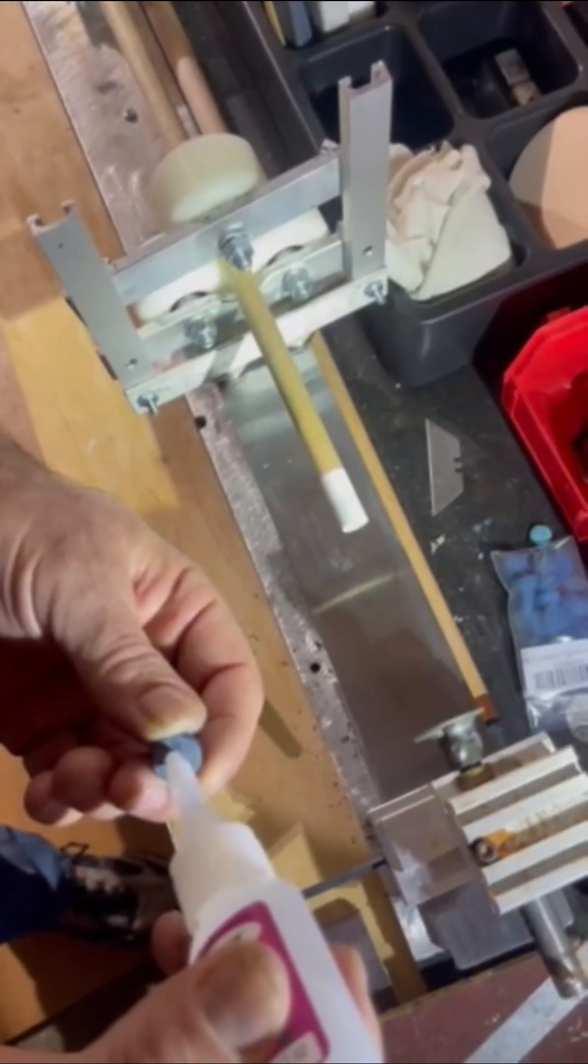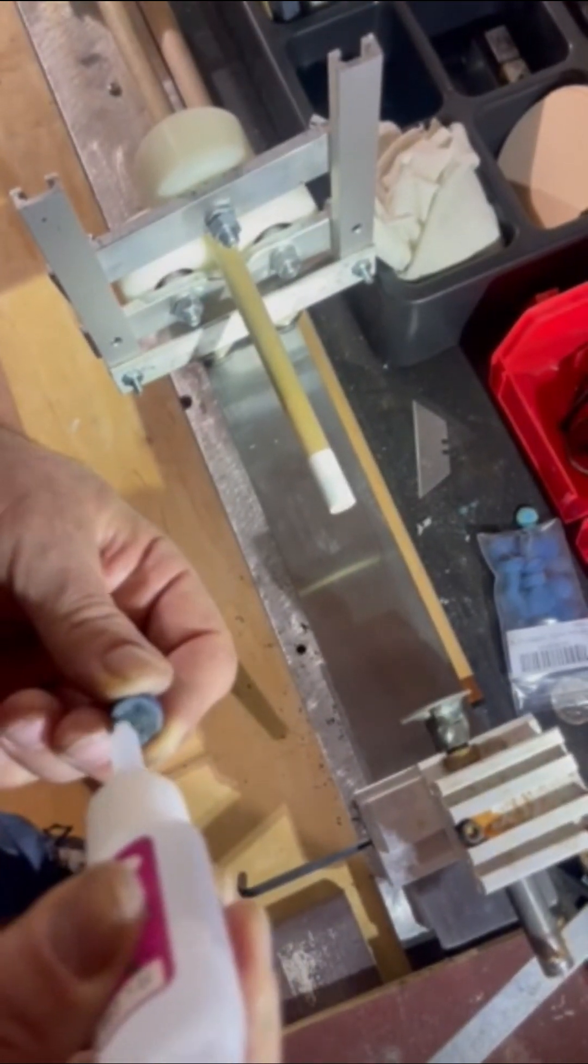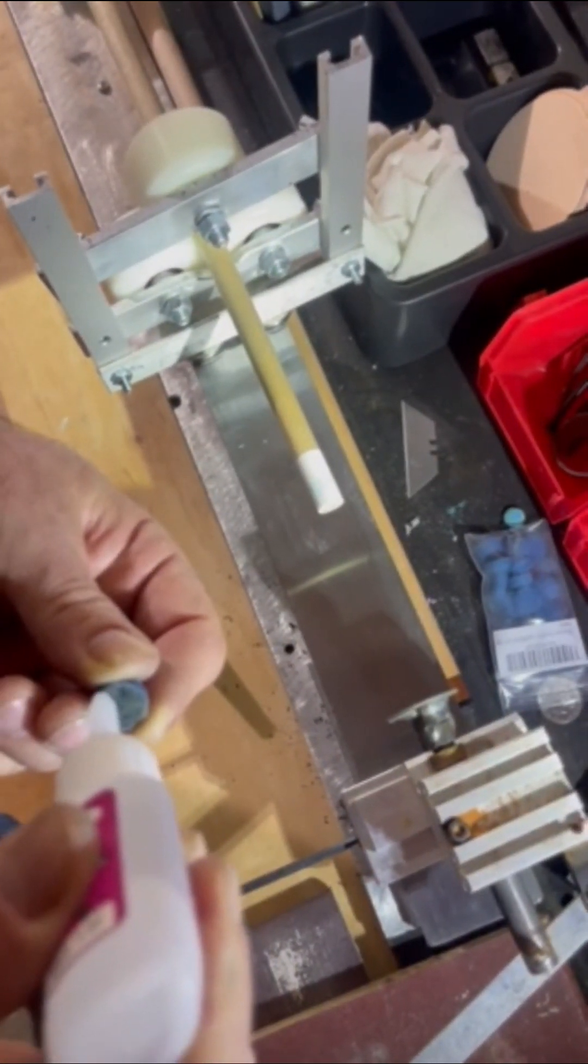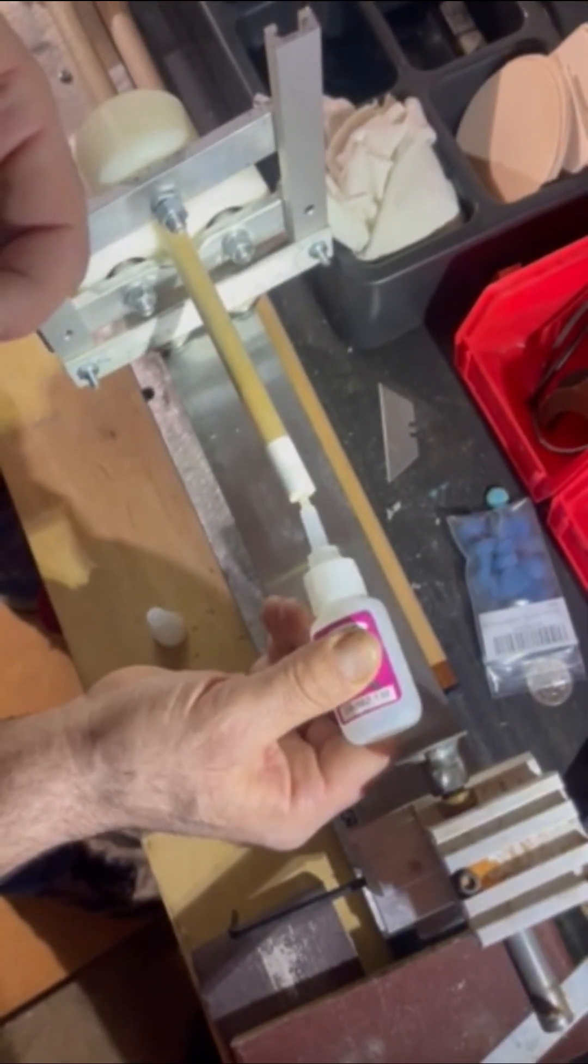Applying the glue to the tip back. Nice even layer there. And then onto the ferrule. Glue into that scored surface that Jason made.